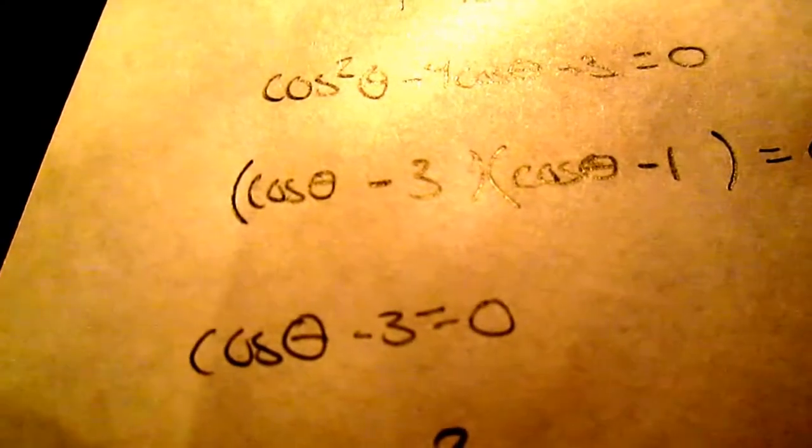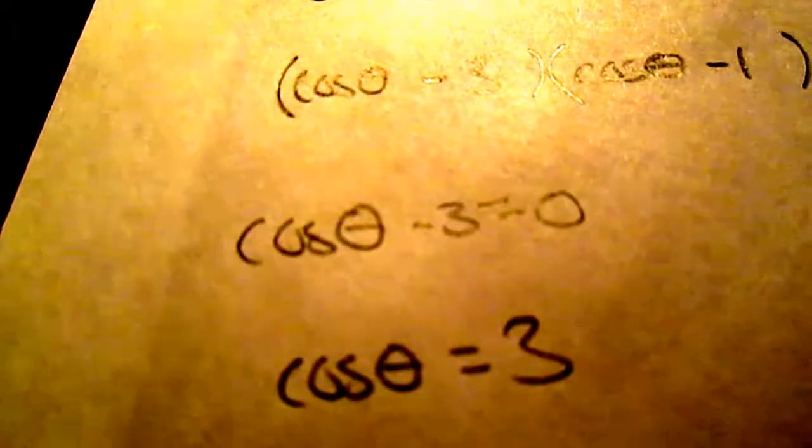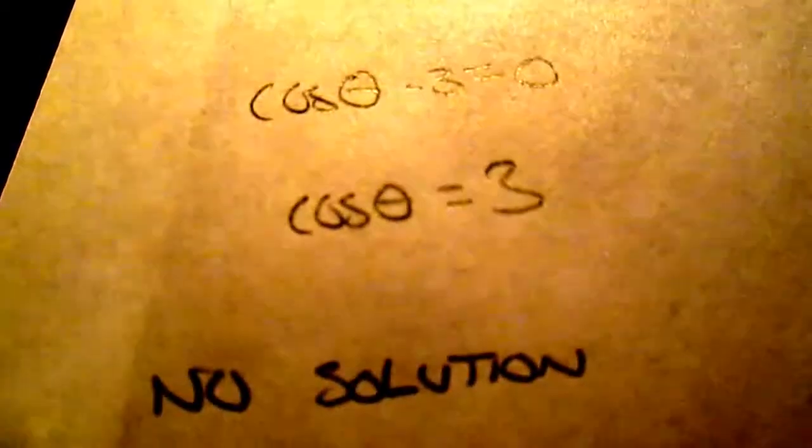So then we're going to set them both to 0. Cosine theta minus 3 equals 0, or cosine theta minus 1 equals 0. So this one we've got cosine theta equals 3, which is actually no solution.